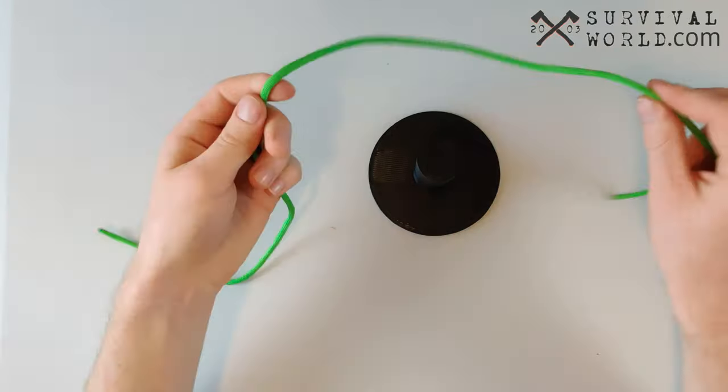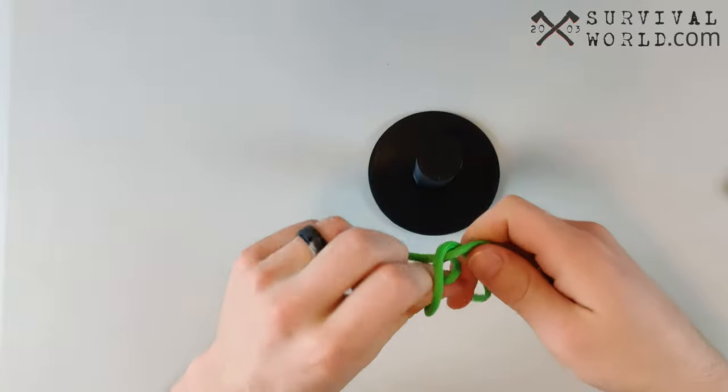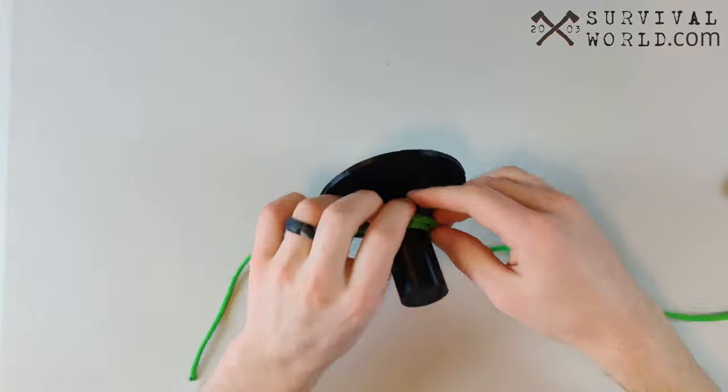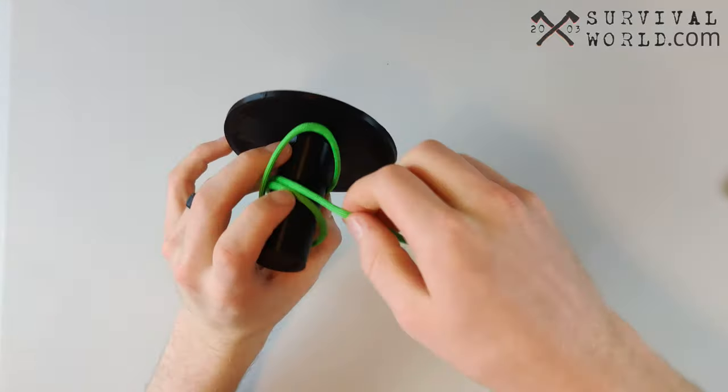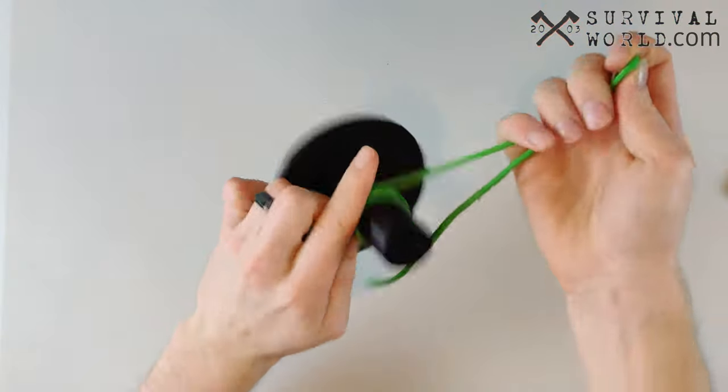The clove hitch also can be adjusted to be shorter or longer pretty easily, just by tugging on an end and making sure your knot has a little bit of slack in it. You can pull out a little bit and boom, you have another couple inches on the other side.